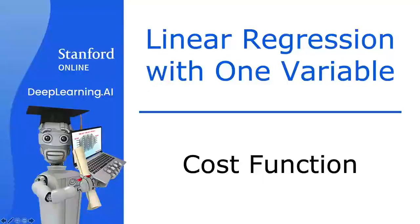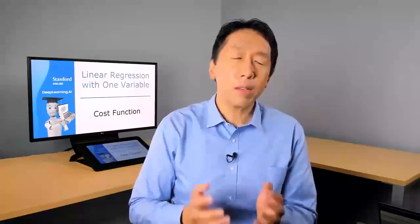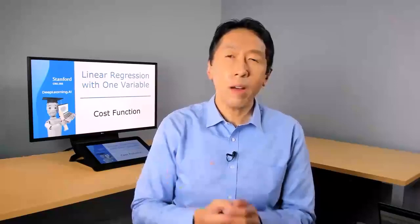In order to implement linear regression, the first key step is for us to define something called a cost function. This is something we'll build in this video. And the cost function will tell us how well the model is doing so that we can try to get it to do better.